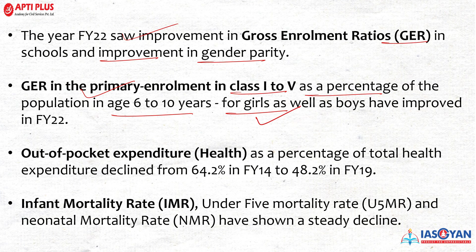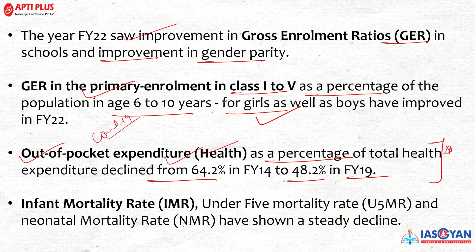Out-of-pocket health expenditure as a percentage of total health expenditure has declined from 64.2% to 48.2% — a very important data point. During COVID-19 this was very high, and this decline is a significant improvement. Current data for 2022-23 is still awaited, but an inference can be drawn about the improving trend of out-of-pocket expenses in India.